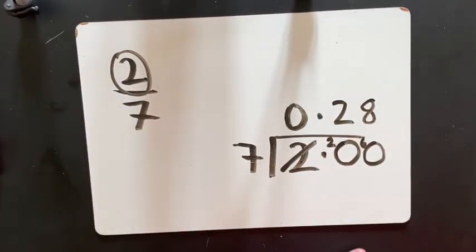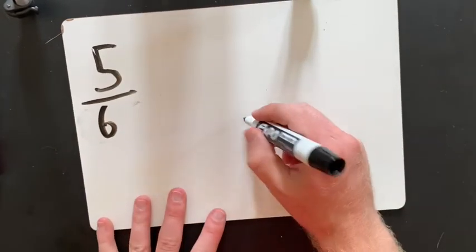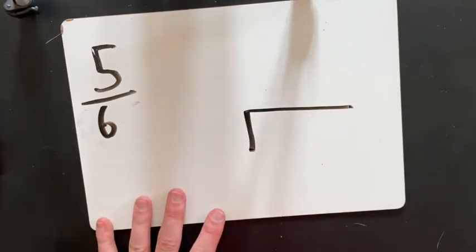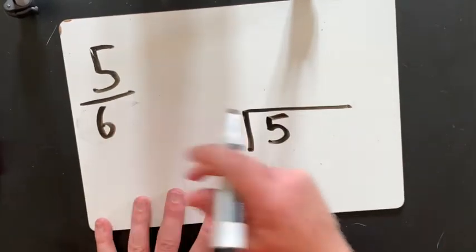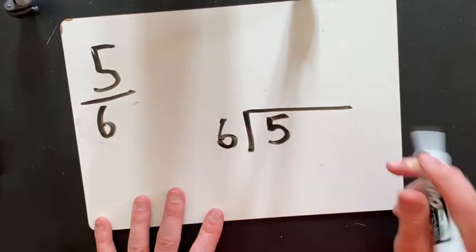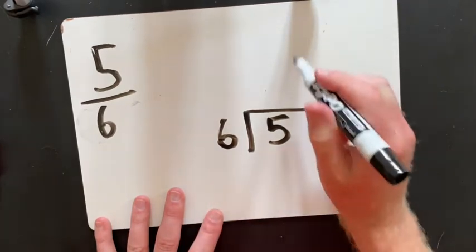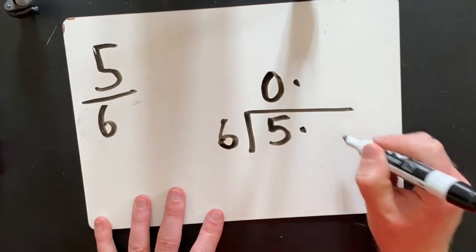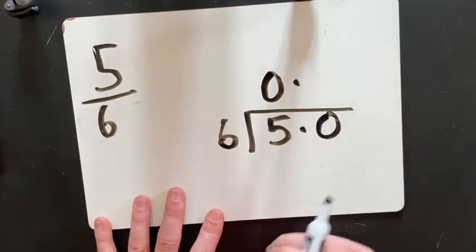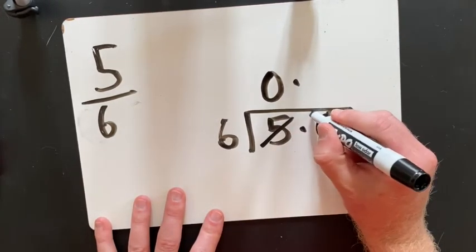Let's do one more example. 5 6s. So draw out your bus stop. Numerator goes inside. Denominator goes outside. How many 6s in 5? 0. Decimal point. Decimal point. Draw a 0. Draw a 0. Carry the 5.